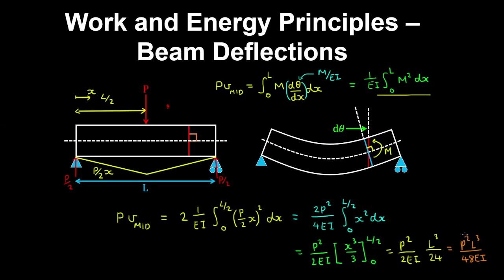And here if we cancel a P from both sides, we see that the deflection at mid-span is PL cubed on 48EI, which is the well-known result for a simply supported beam under a point load at mid-span.